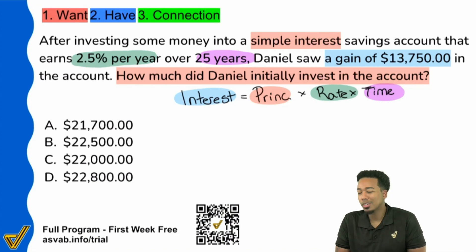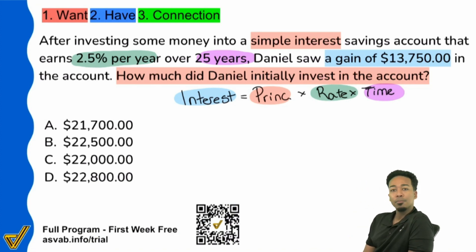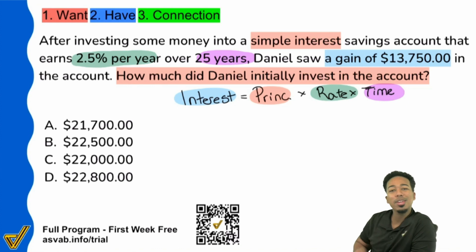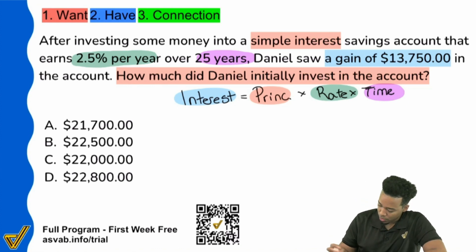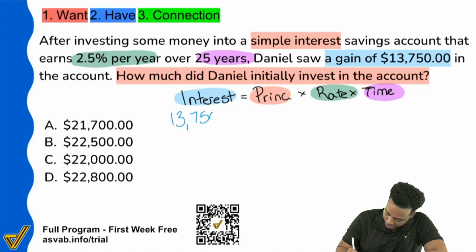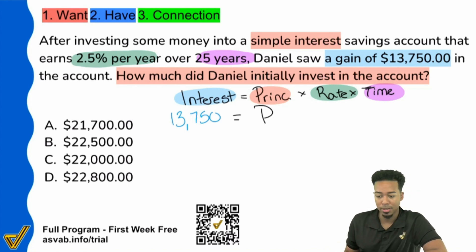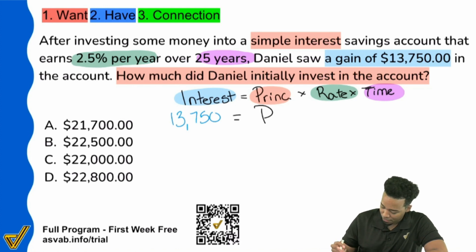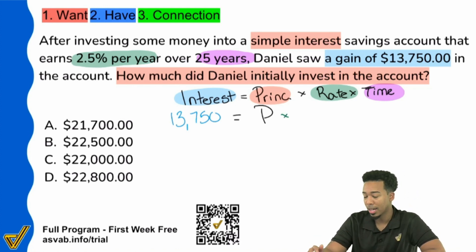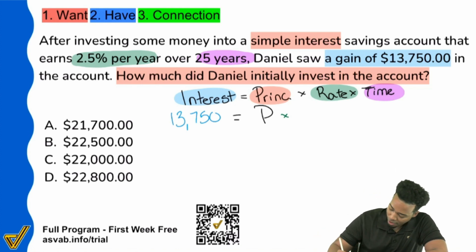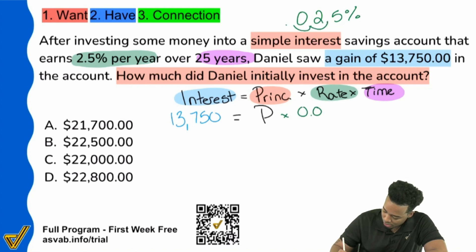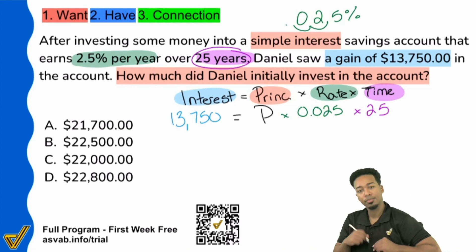A lot of people are able to get to that point in terms of understanding what you're looking for and potentially the setup. But then a lot of people get really hung up on the actual calculation. So let me help you out with that. The interest we earned is $13,750. The principal is what we're looking for, so I'll leave that as P. Our rate is 2.5% — and don't forget to turn that into a decimal: 0.025. And the time is 25 years. And there we have it.